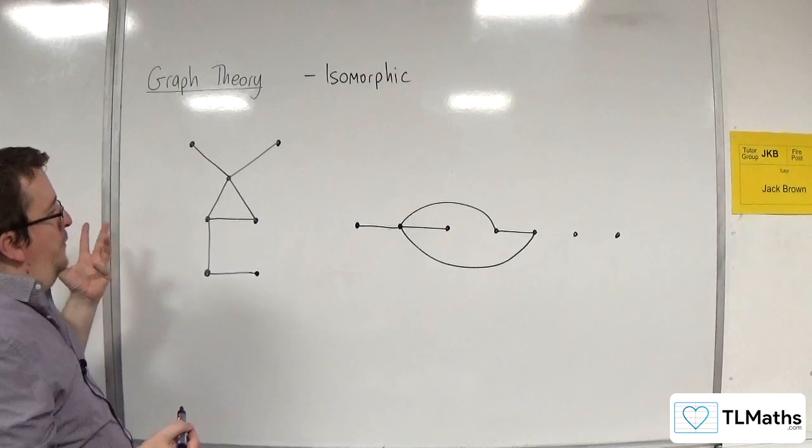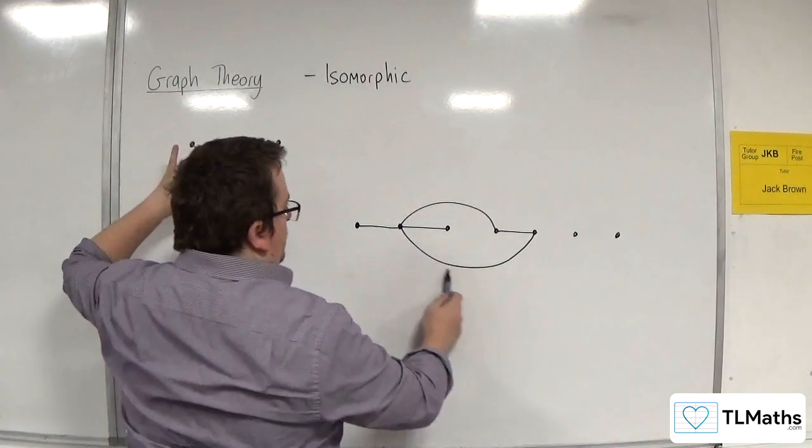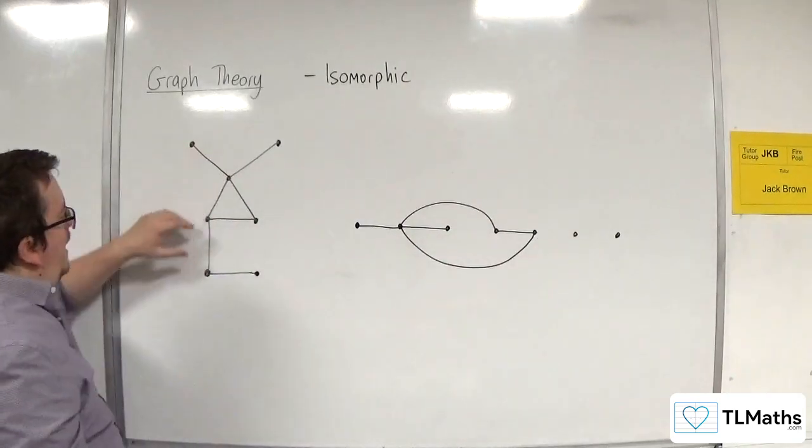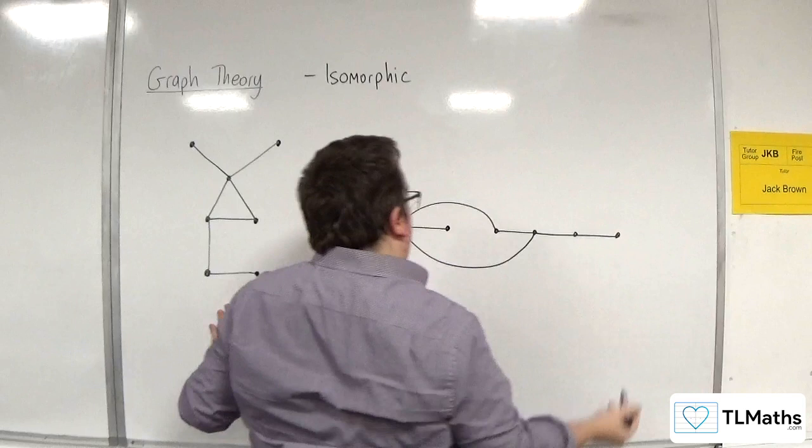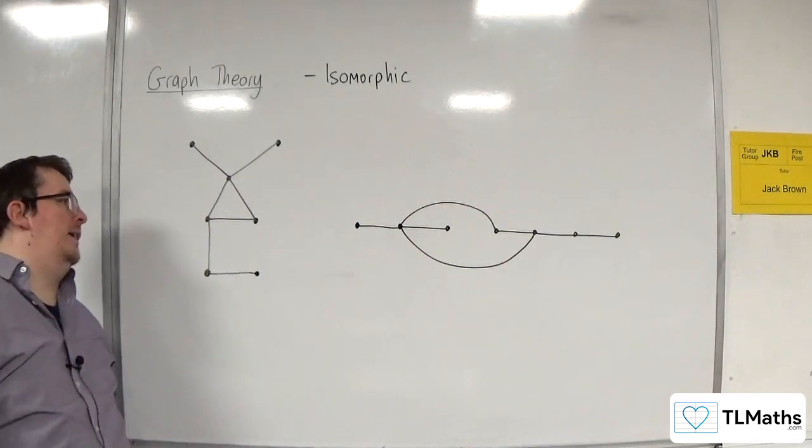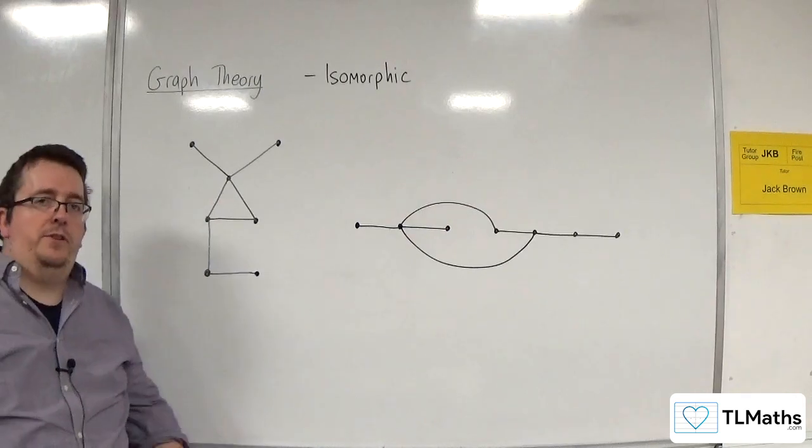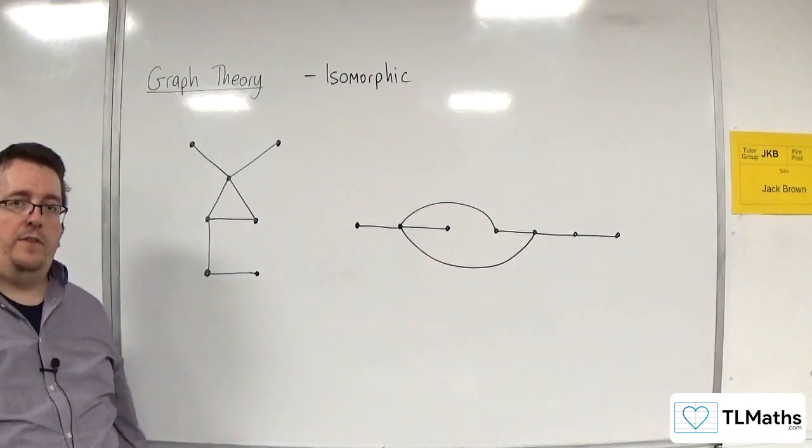Now, then one of those can then, so that one there that I started off with, for example, needs to be connected to the other two. Like so. And so this, although looking very, very different, is a graph that is isomorphic to this one.